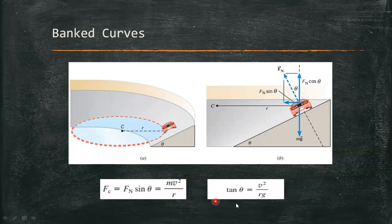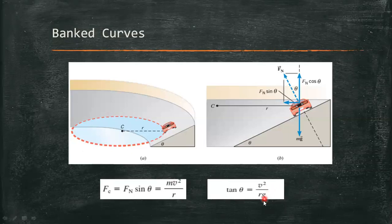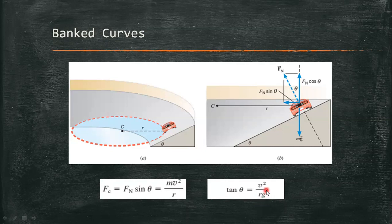And to get theta or the angle between the surface and the horizontal, we have this formula: tan theta equals v² divided by r times g, the gravitational pull, which is 9.81 meters per second squared or 32.2 feet per second squared.